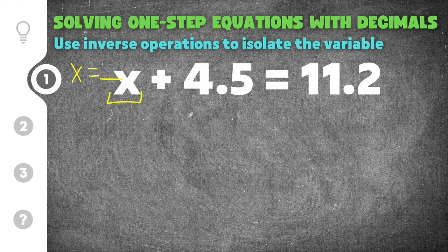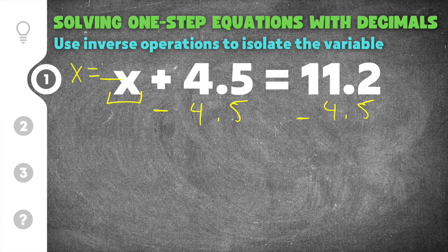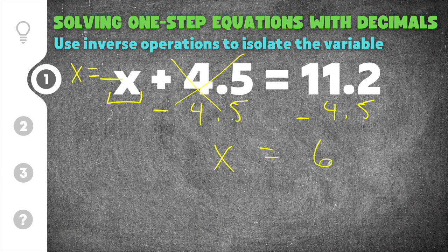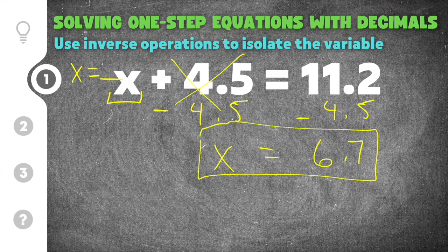So the opposite of plus 4.5 is minus 4.5. So I'm going to do minus 4.5 on this side. Whatever you do to one side you also have to do to the other. So I'm going to do minus 4.5 to this side. Now when I do that the plus 4.5 and the minus 4.5 will cancel which leaves us with just x on this side. So the only thing left is this x. We have x equals 11.2 minus 4.5 and that is 6.7. So that's going to be our solution x equals 6.7.